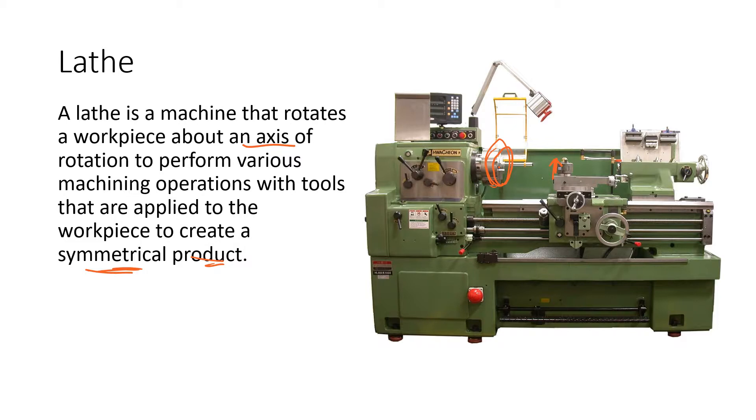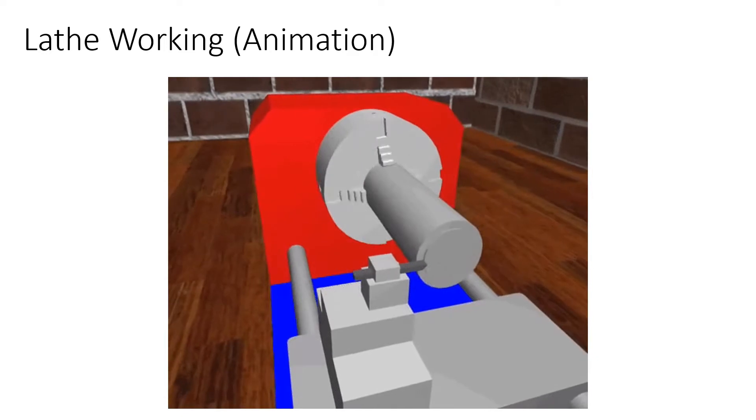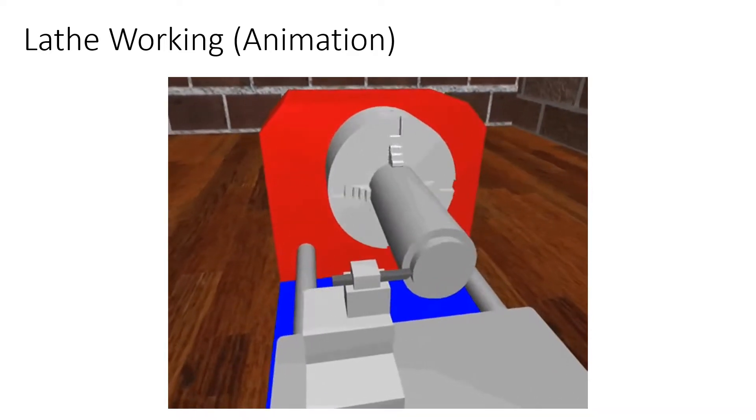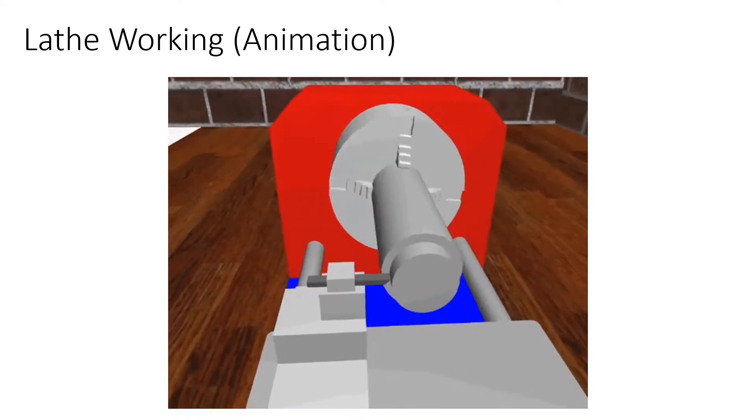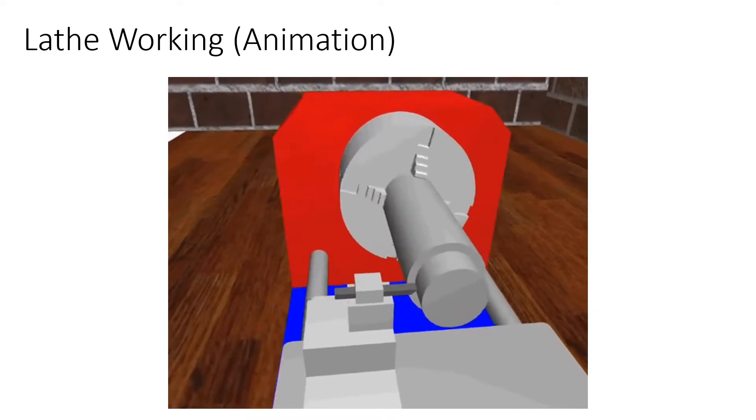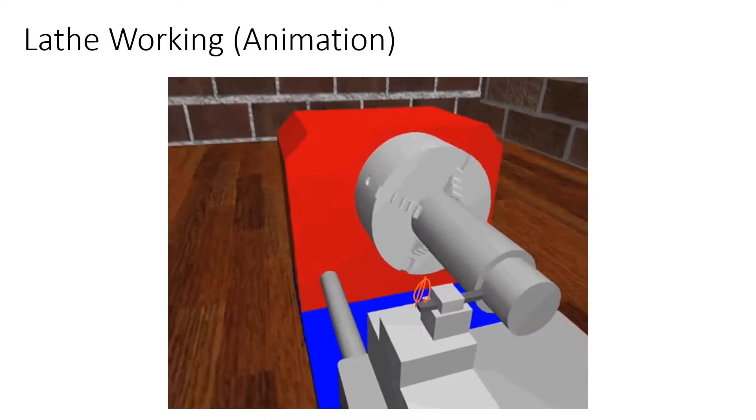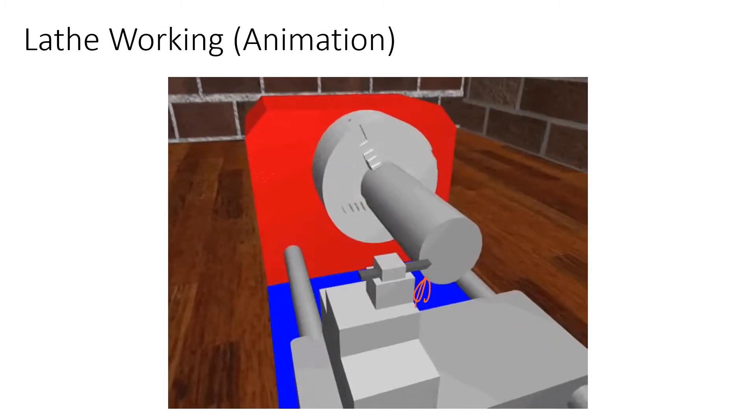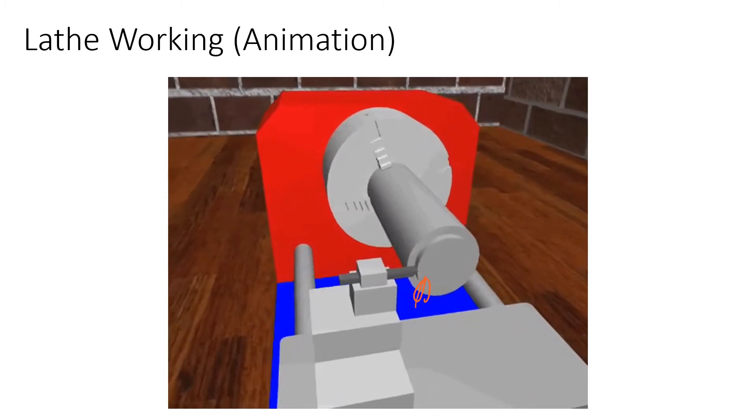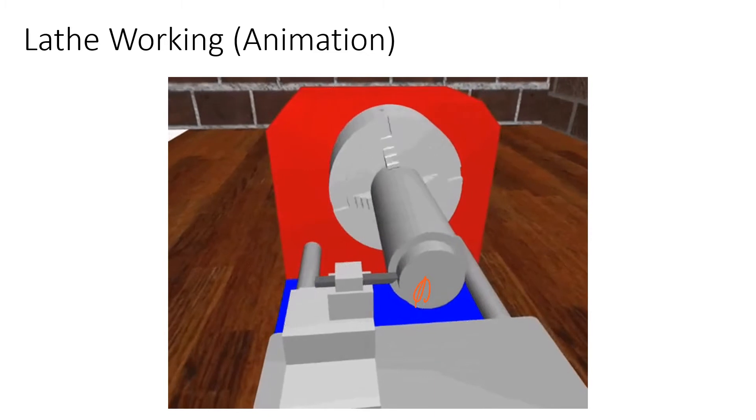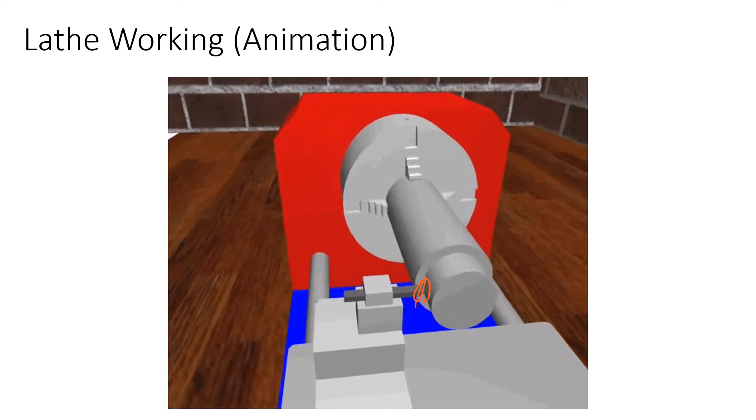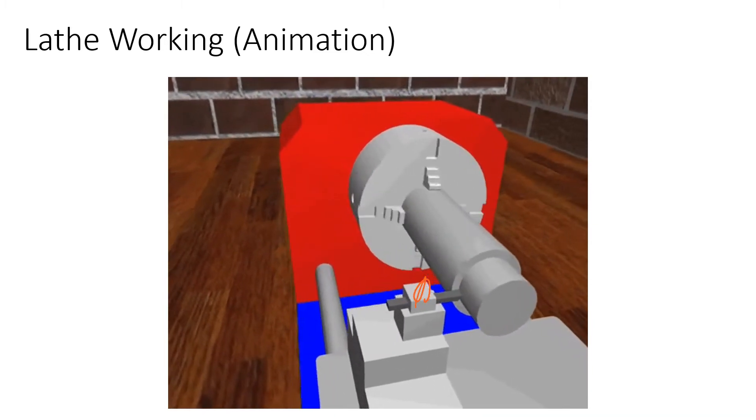Let's see an animation to understand it better. You can see how beautifully this animation is showing that as the workpiece is rotating, this is the cutting tool. This cutting tool is slowly cutting the entire cylindrical form into a smaller cylinder. By just using various combinations of cutting tools and various axes of rotation, we can achieve various designs and patterns.